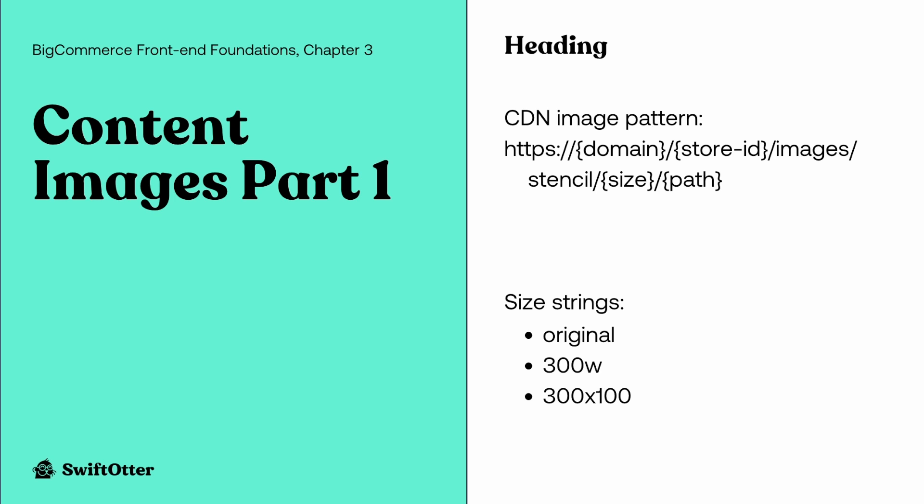The third format for the size segment is two numerical values joined by an X — that's width by height. This establishes a resizing constraint for both dimensions. The original aspect ratio is maintained, so the image is resized to whatever keeps both dimensions within the maximum numbers given. For example, a string of '300x100' could result in it being resized to exactly 300 width if that would yield a height under 100, or to exactly 100 height if that's needed to keep the width under 300.